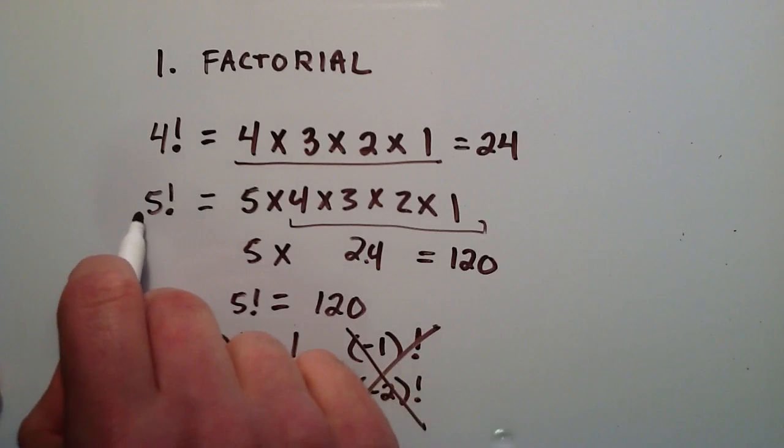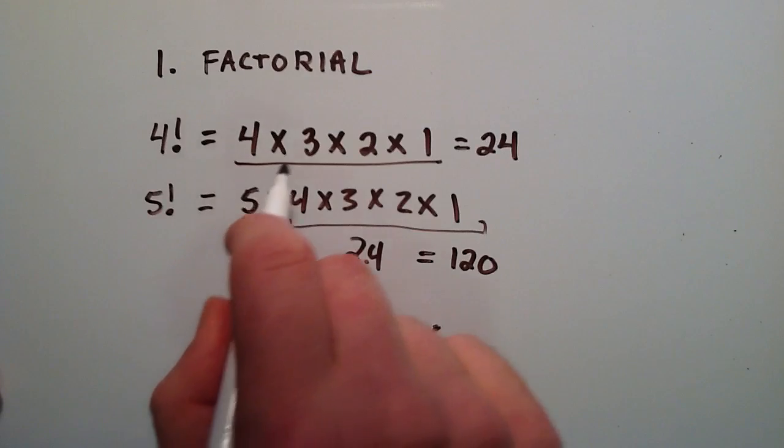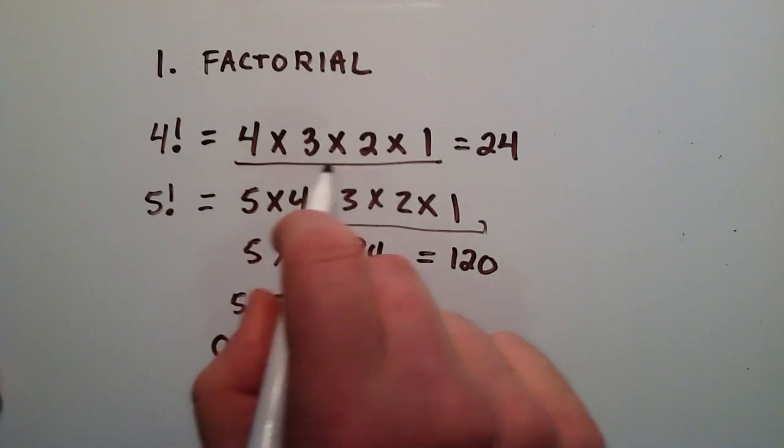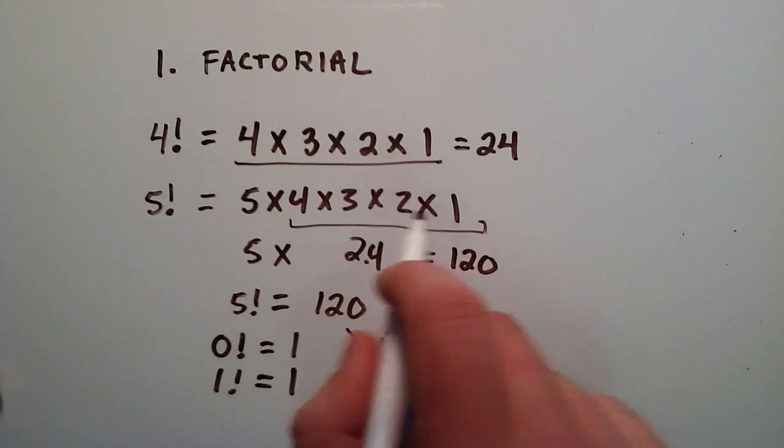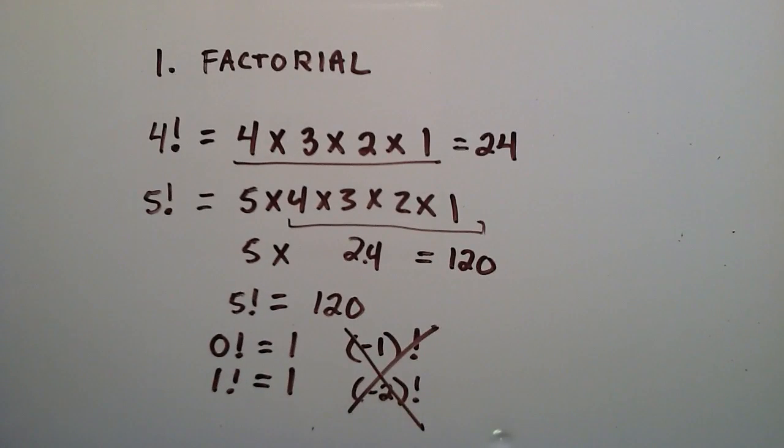And if it's any other integer, basically, it's going to be that integer multiplied by 1 less than that integer. And then you keep subtracting 1 all the way down until you get to 1, multiply them all together. And so that's basically what a factorial is.